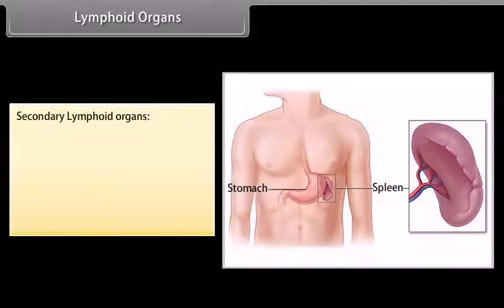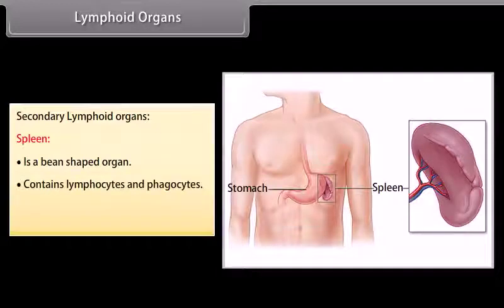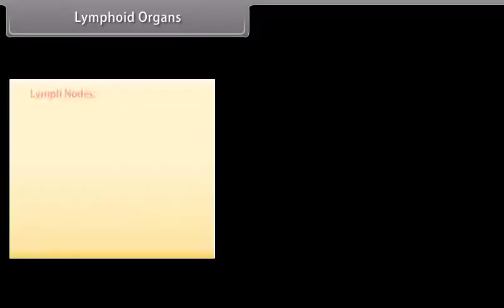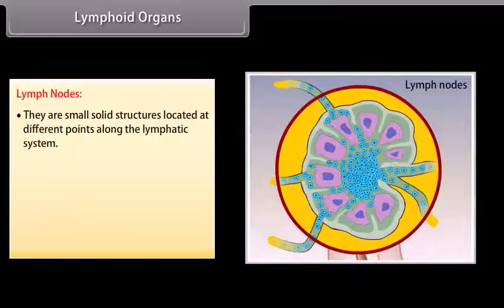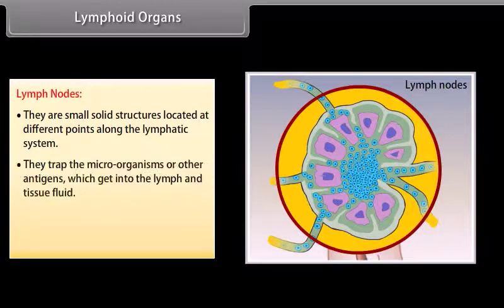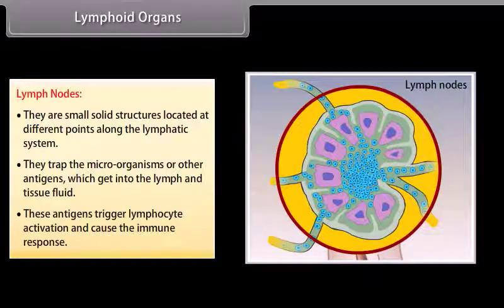The spleen is a bean-shaped organ containing lymphocytes and phagocytes, and acts as a filter of the blood by trapping blood-borne micro-organisms. Lymph nodes are small solid structures located at different points along the lymphatic system. They trap micro-organisms or other antigens that enter the lymph and tissue fluid, triggering lymphocyte activation and an immune response.